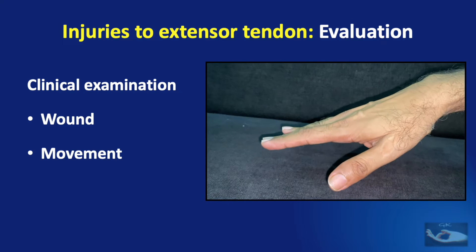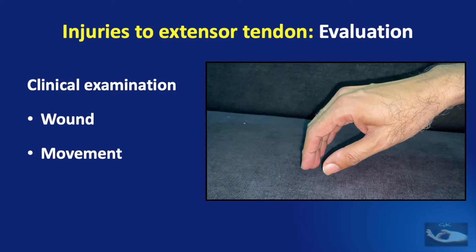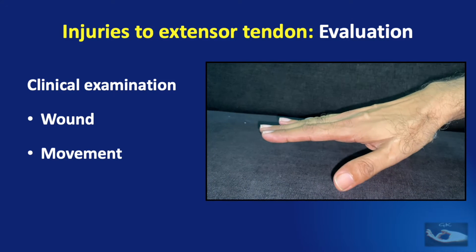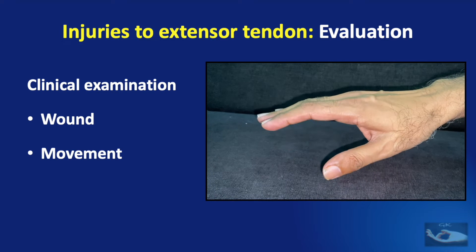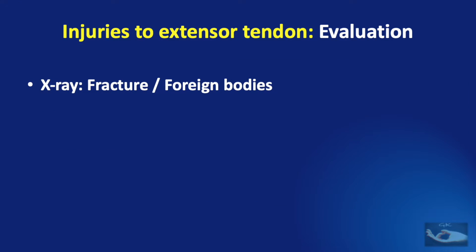Asking the patient simply to extend the fingers when in the air will give a very false result. After clinically assessing for injury to the extensor tendon, a plain radiograph may be required to rule out any fracture or foreign bodies. An MRI may be required in the rare event of a closed injury where there is a rupture of the extensor tendon.